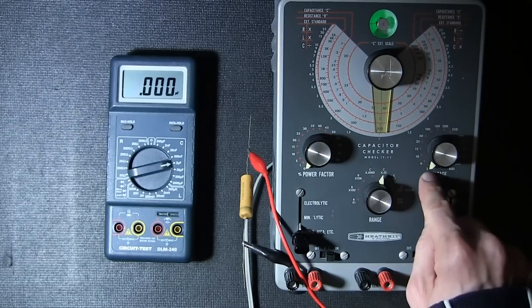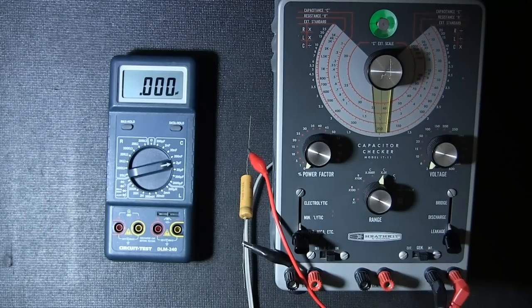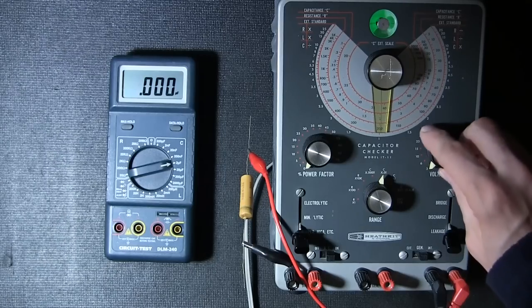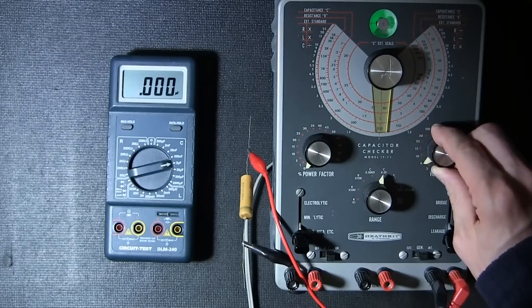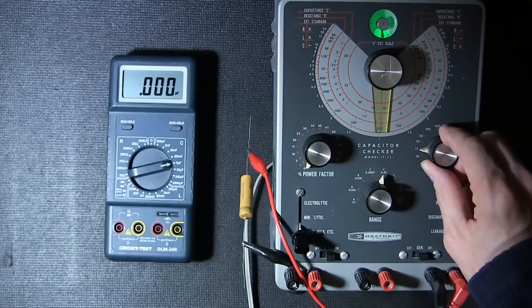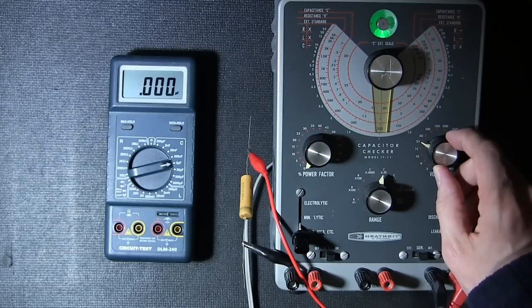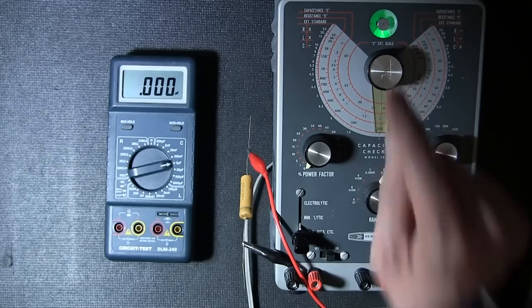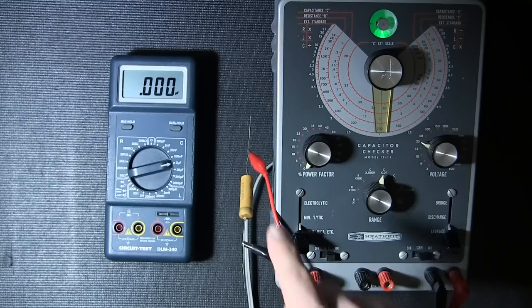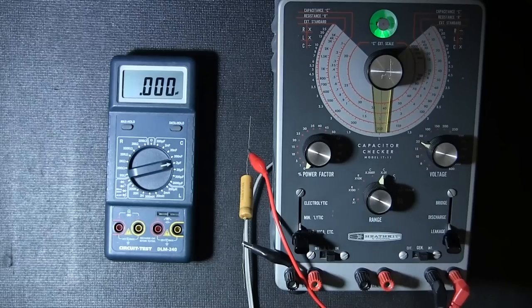There's 3 volts across this capacitor now, the eye is open indicating that there is not excessive leakage current. So we'll go to 6 volts, 10 volts, 15 volts, 25 volts. You can see it's slowing down. The eye isn't opening anymore indicating that this capacitor is excessively leaky at 25 volts.